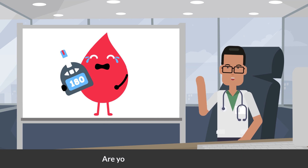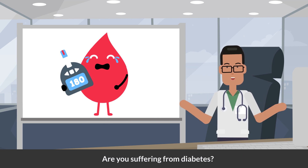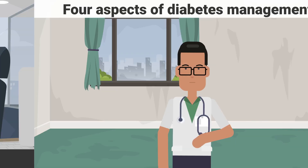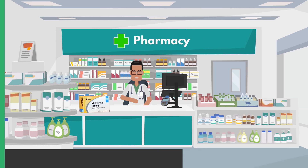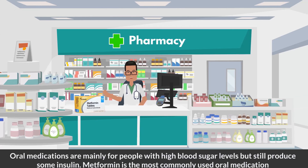Are you suffering from diabetes? Watch this video as we explain how to manage it — we make it easy for you. Diabetes management has four aspects. The first is oral medications. These medications are mainly for people with high blood sugar levels.